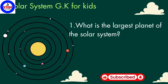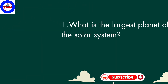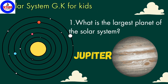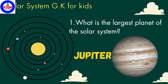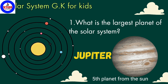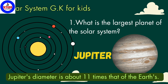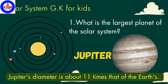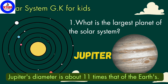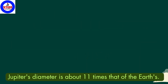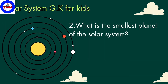The largest planet of the solar system is Jupiter. In order, Jupiter is the fifth planet from the sun. Out of all eight planets, Jupiter is the largest. Do you know, students, Jupiter's diameter is about 11 times that of the Earth's diameter.